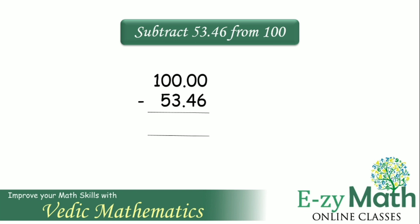Consider the subtrahend. Here the subtrahend is 53.46. We have to subtract each of the digits of the subtrahend from 9 and the last one from 10.